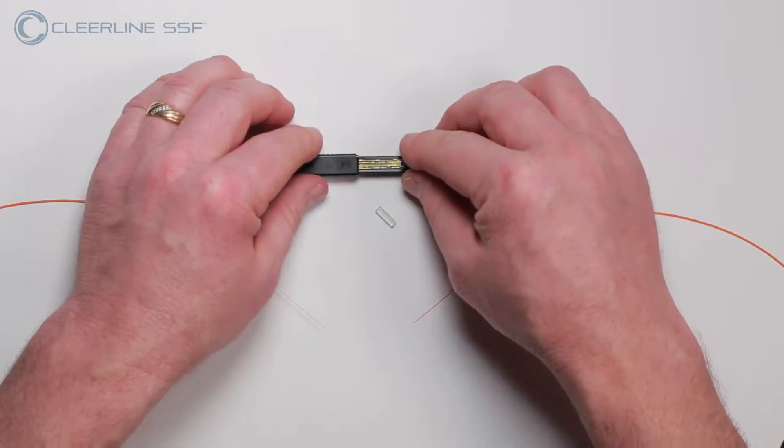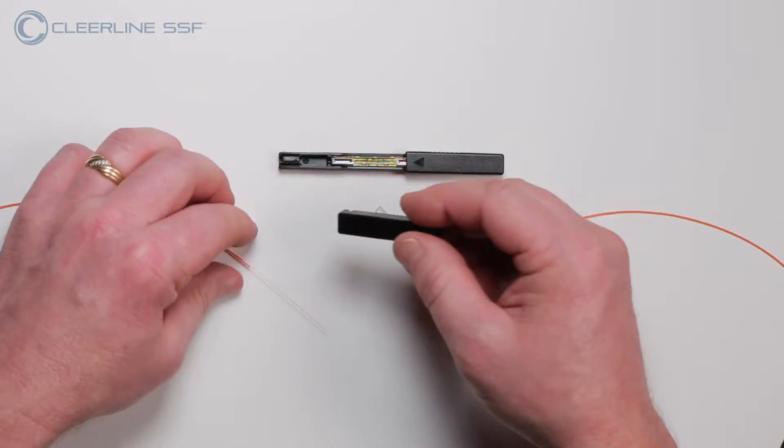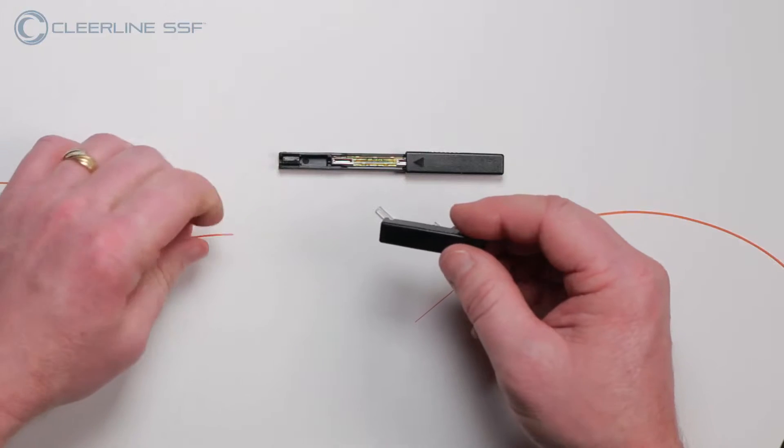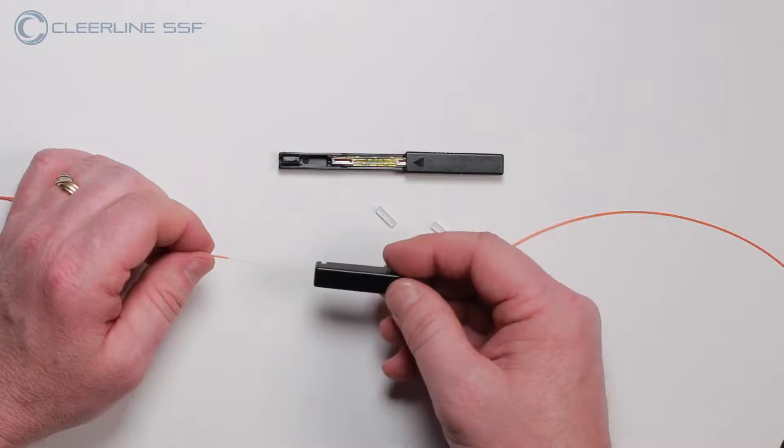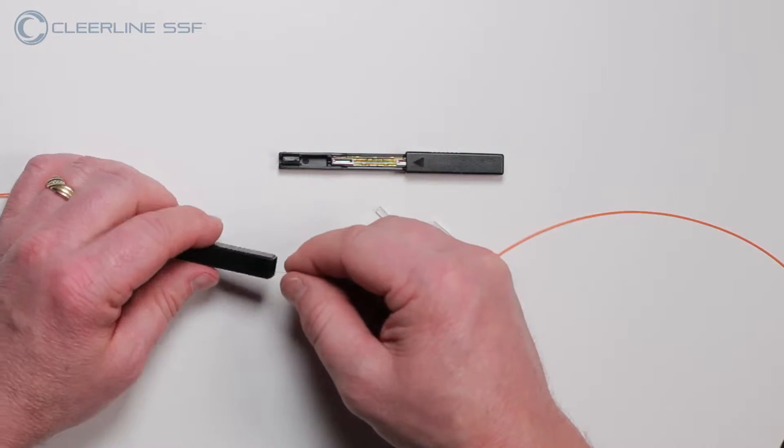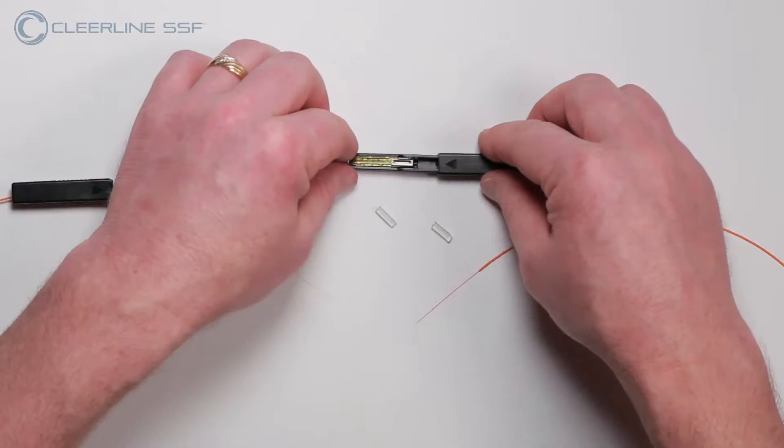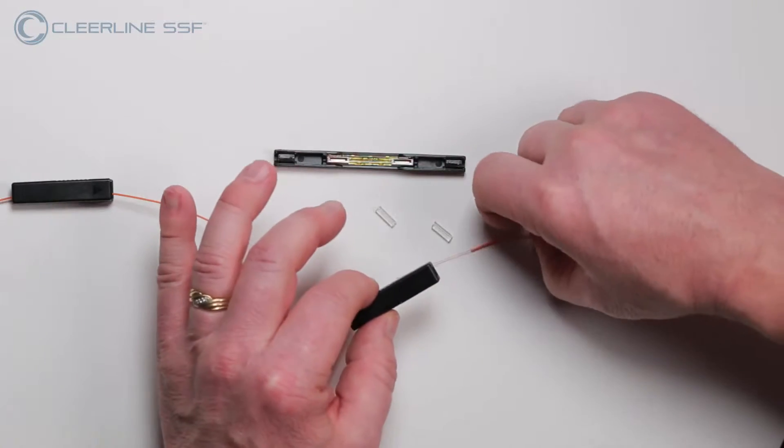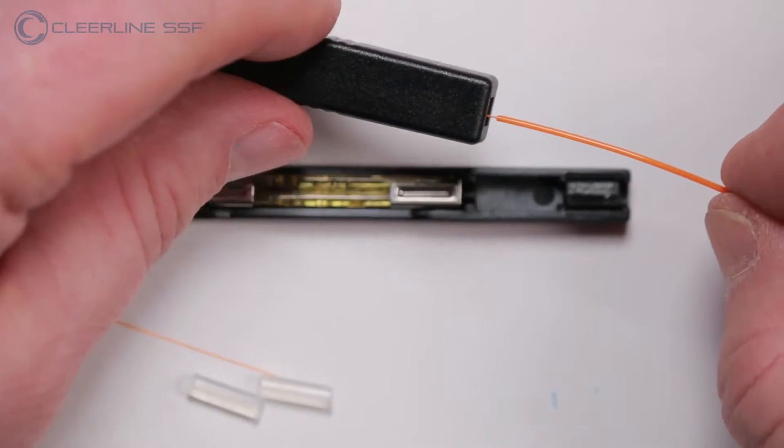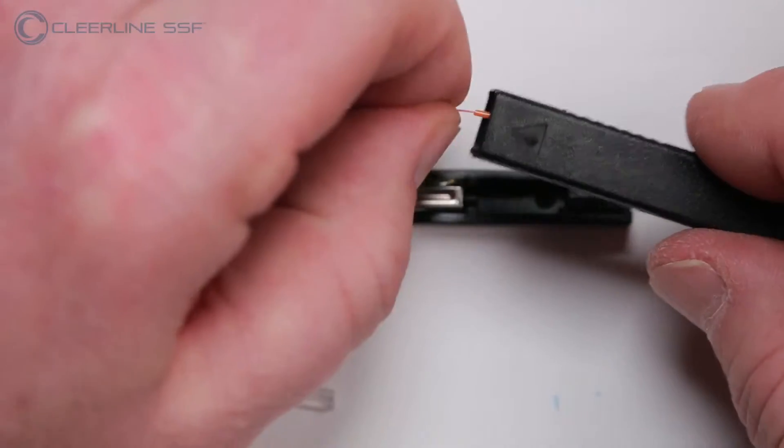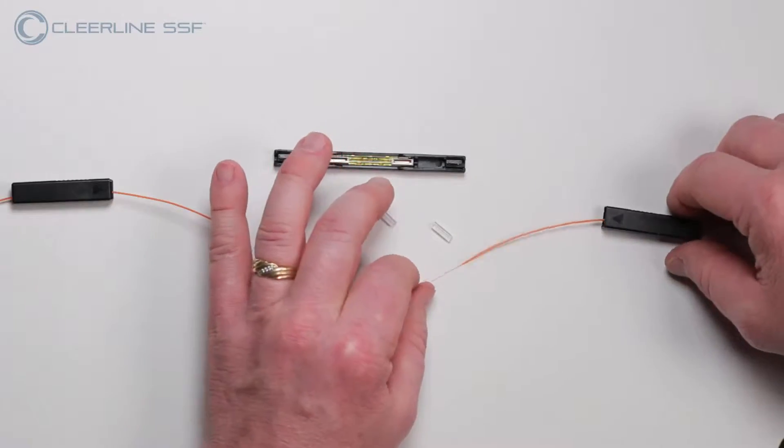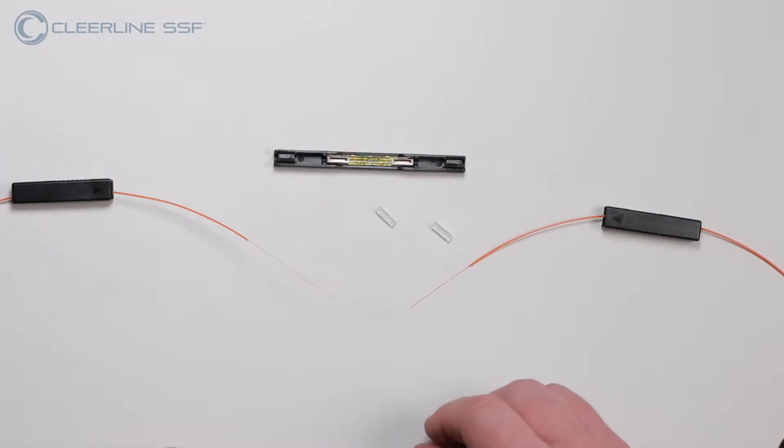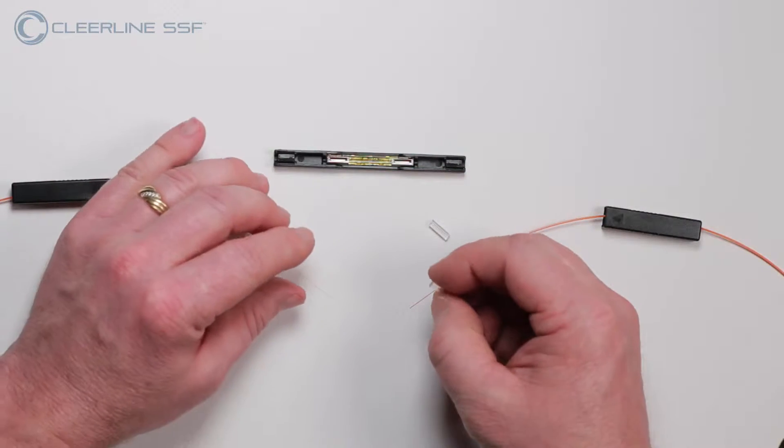Step 1: Remove the left and right covers from the mechanical splice, placing one on each leg of the cable to be joined with arrows pointed towards the splice. Place a 900 micron build-up tube onto each of the two legs.